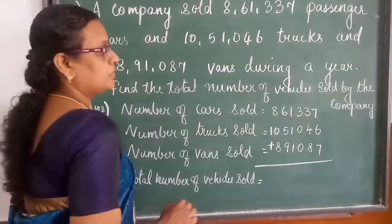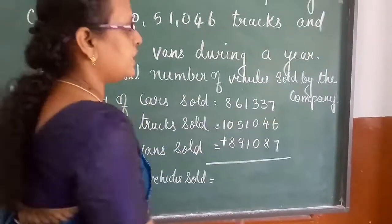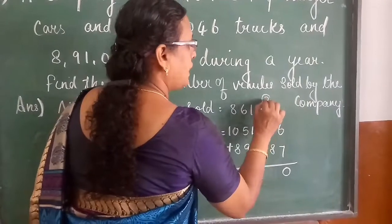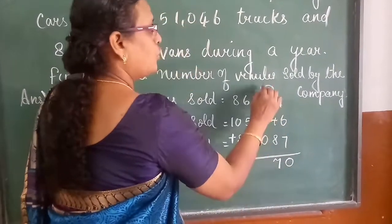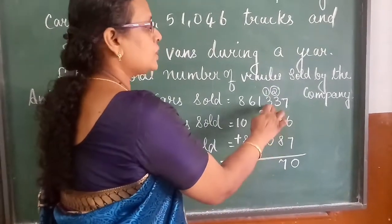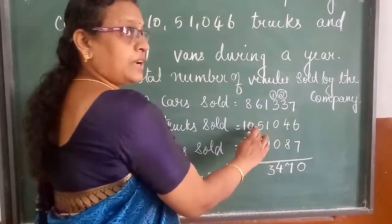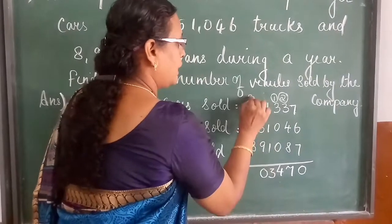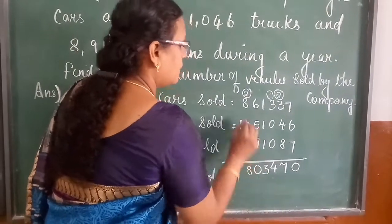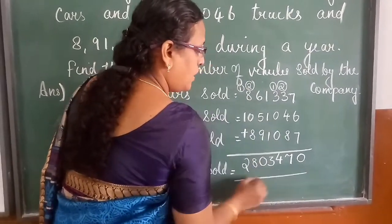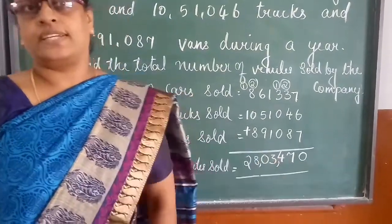Total number of vehicles sold equals — just add these three. Adding from the right: 7+6+7=20, write 0 carry 2; 3+4+8+2=17, write 7 carry 1; 3+0+0+1=4; 1+1+9=11 carry 1; 6+5+8+1+1=18, write 8 carry 1; 1+0+1+1=2. So, 28,03,470 vehicles are sold in one year.